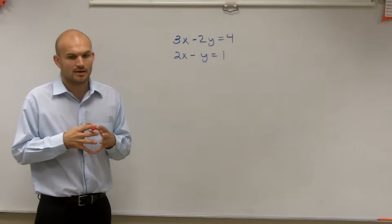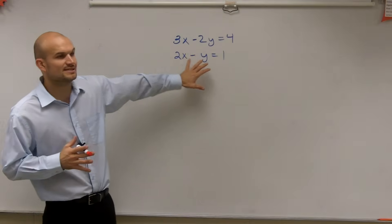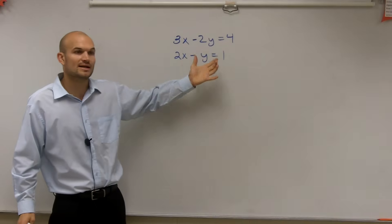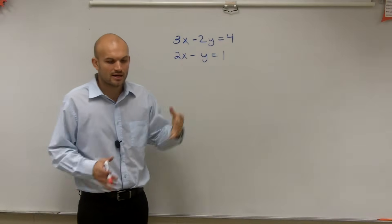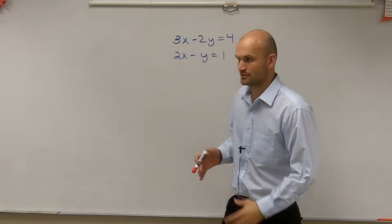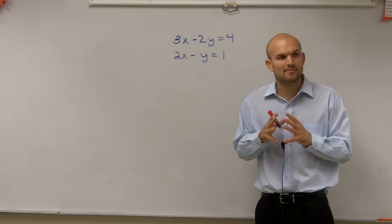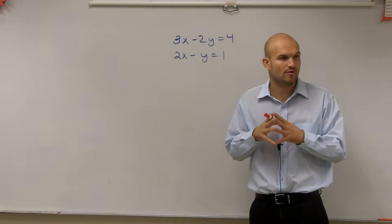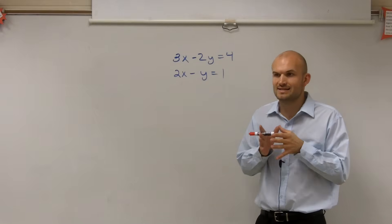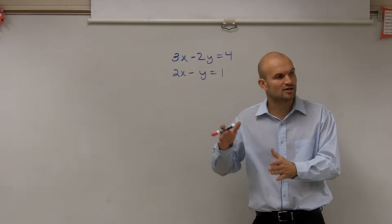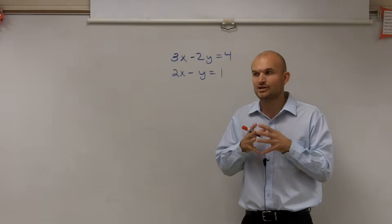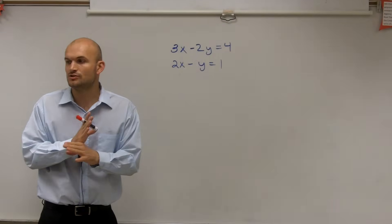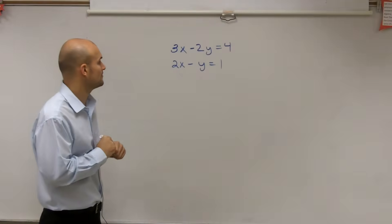Now, a lot of you, when it's in standard form, prefer to find the x and y intercepts. A lot of times, depending on the solution, that might make it a little bit more difficult. So, for solving systems, I am going to prefer to solve by setting it into y equals mx plus b form. The reason why is I can follow the slope to every single point on the line, so the intersection should be a little bit more clear. Because, remember, we want to find where these two lines intersect, if they do at all.